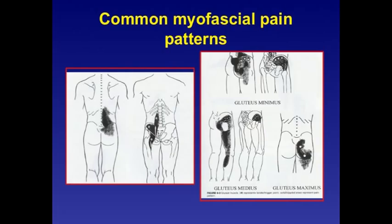Common myofascial pain patterns vary from patient to patient; however, there are similarities, especially regarding the characteristic diffuse pain in the paraspinal area going toward the sacroiliac joint, with trigger points forming in typical locations — around the pelvic crest, the sciatic notch, and the location of the piriformis.